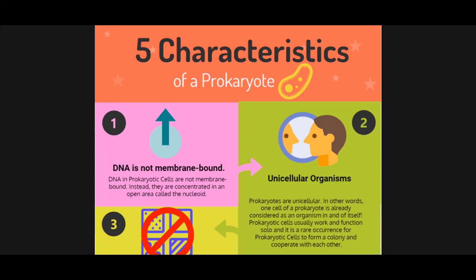Number two: all prokaryotic cells are unicellular organisms. This means that just one cell, if it is a prokaryote, it already means that it is an organism by itself. Prokaryotic cells usually work and function solo, and it is very rare to find a group of prokaryotic cells working together to form a colony. That's why they are called unicellular organisms.